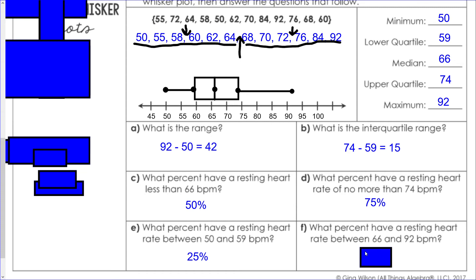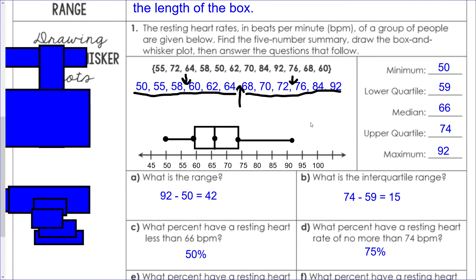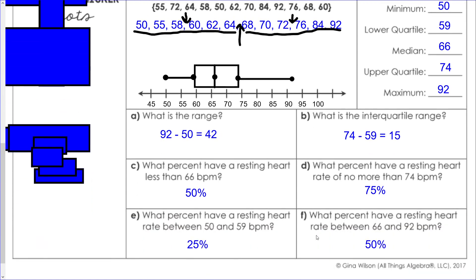What percent have a resting heart rate between 66 and 92? That's between our median and our maximum. We've got one quarter and two quarters of our data, which means we have 50 percent total of the data points involved in this survey.